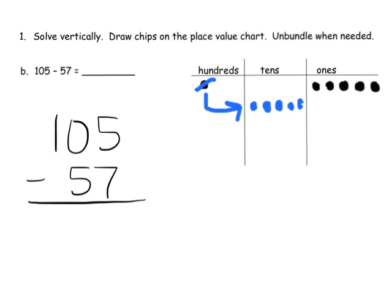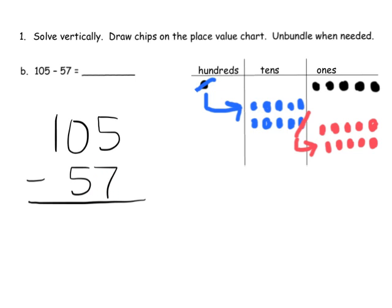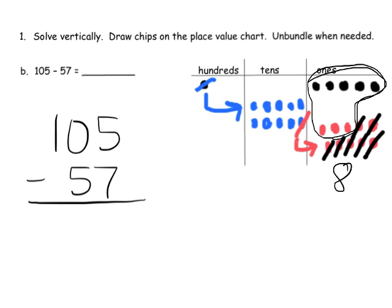We're going to unbundle from the 100, which gives us 10 tens. And now we're going to unbundle from a 10, and that's going to give us 10 ones. So now we're able to subtract — it says subtract 7 ones. So let's subtract 7 ones: 1, 2, 3, 4, 5, 6, 7. That leaves us with 8 ones left over.